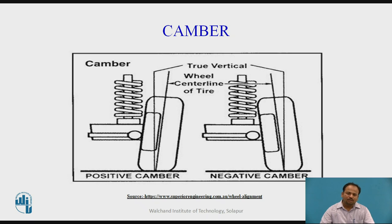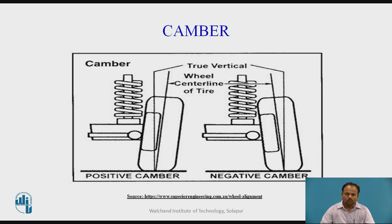However, it is difficult to obtain zero camber. The camber goes negative when the tire hits a bump and goes positive when it falls in a pothole. This is caused by unequal length control arms of the suspension system. Any camber, either positive or negative, causes uneven tire wear. So ideally camber should be zero, which is somewhat difficult, and initially negative camber is provided.